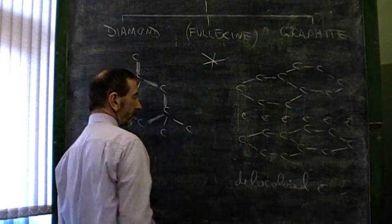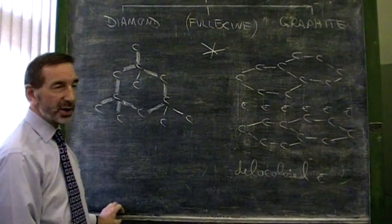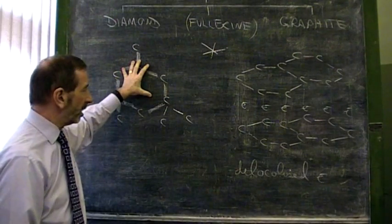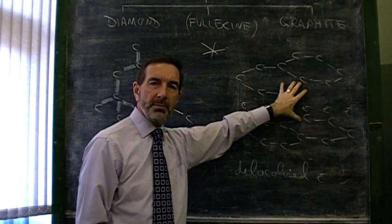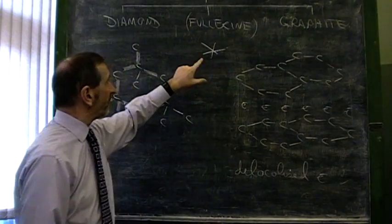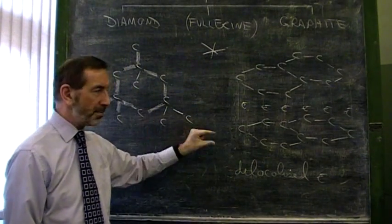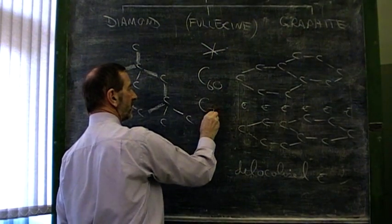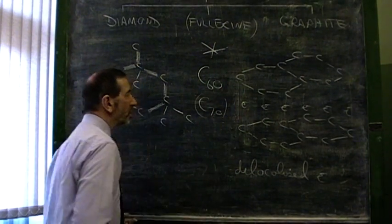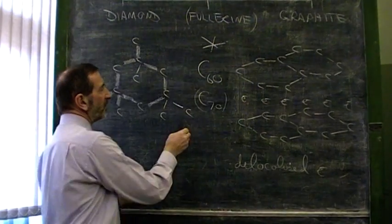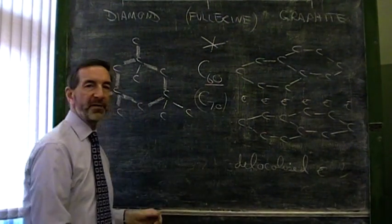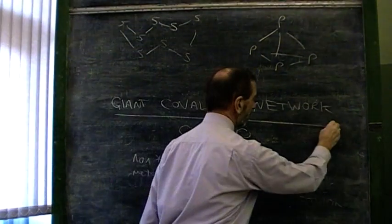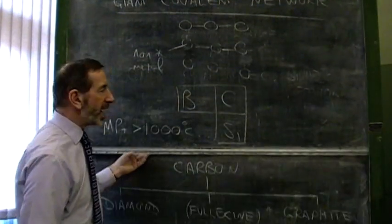And then finally, fullerene. Now, fullerene does not have a gigantic structure. The number of atoms in here would be infinite. Likewise here, an unmeasurable number of atoms. But fullerene has a finite number of carbon atoms. Very often, C60. Sometimes, C70. So, what are we looking at here? Well, if this has a specific number of atoms, it does not have a giant covalent network. Fullerenes are molecular.